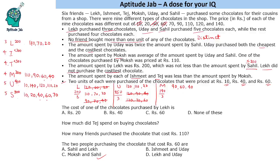Now we come to Ishmit and Tej. Each of them spends less than 300 and buys 4 chocolates. Taking minimum possible values: 20 + 70 + 90 + 110 = 290, which is less than 300. But if we try 120, then 90 + 180 + 300 = 300, which is not less than 300. So the only possibility for both of them is 20, 70, 90 and 110. This completes the allotment of chocolates to all six people.